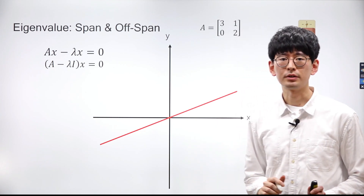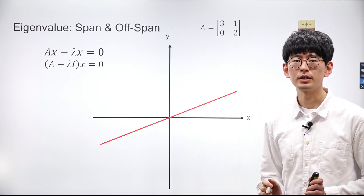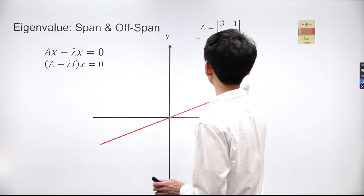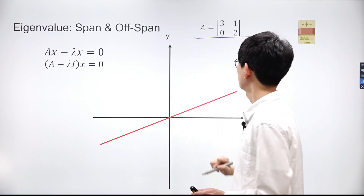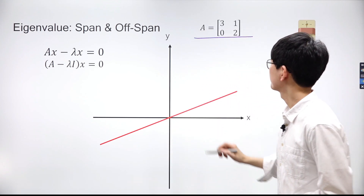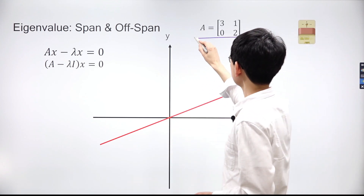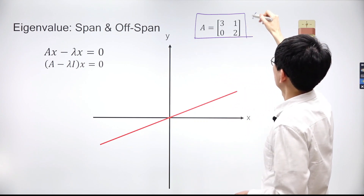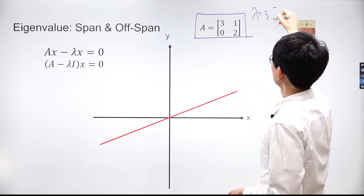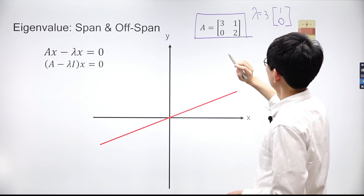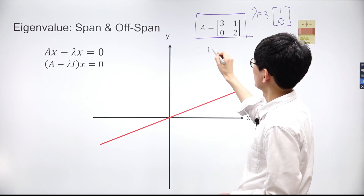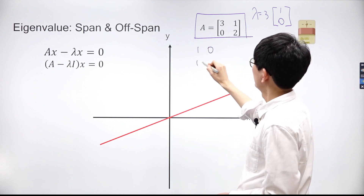Let's delve into the geometric interpretations of eigenvalues and eigenvectors. Imagine a two-dimensional plane displayed on the screen. Earlier, we found that the eigenvector of matrix A is (1, 0) when the eigenvalue is 3. Now let's quickly determine the eigenvector of matrix A for the eigenvalue 2.